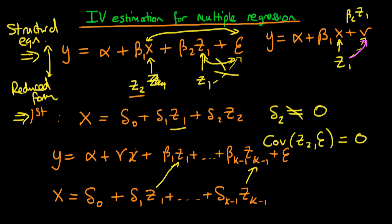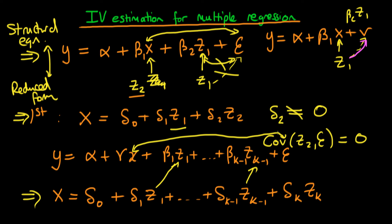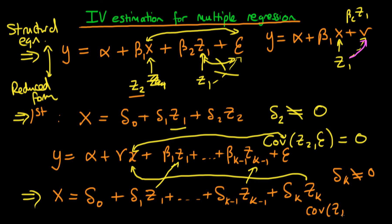The problem is that x is still endogenous, so we require some instrument to act for the x term. We might be able to find another instrument, which I'll call z_k. We include delta k times z_k in our reduced form equation, and z_k acts as an instrument for x in the structural equation. The conditions for z_k to be a good instrument are that delta k must be non-zero, and the covariance of z_k with the original error in the structural equation must equal zero. In the next video, I'll talk about the explicit form of IV estimators in the multiple regression framework.